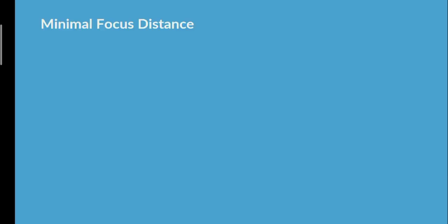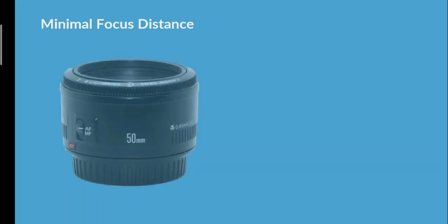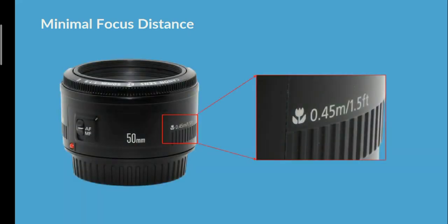Every lens has what's called a minimum focusing distance. If you haven't got a dedicated macro lens, it doesn't mean you won't be able to get very close to your subject — your lens may have a little macro symbol indicating how close you can get before the lens will no longer focus. A simple test is to switch to manual focus and move in close to see how near you can get before focus is lost.